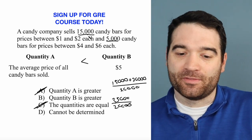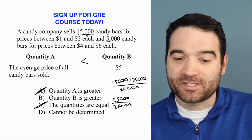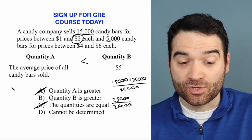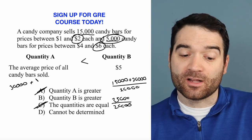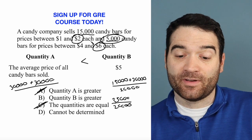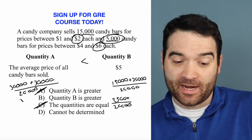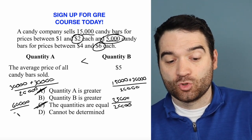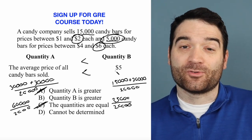Now let's try to maximize the price of all the candy bars sold. We'll say all 15,000 were sold for $2 each, so that's $30,000. And all 5,000 were sold for $6 each, so that's another $30,000. That's $60,000 divided by 20,000 total candy bars, and that comes out to 3. So in this case, quantity B is greater again.